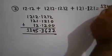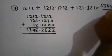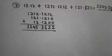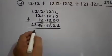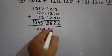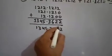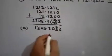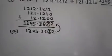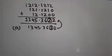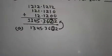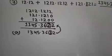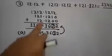1345.3622 will be the correct answer. Students, mark option A. Instead of 1345.3612, you will mark here — option A is correct. There is a writing mistake in the option, so correct your answer by doing the addition using this method.